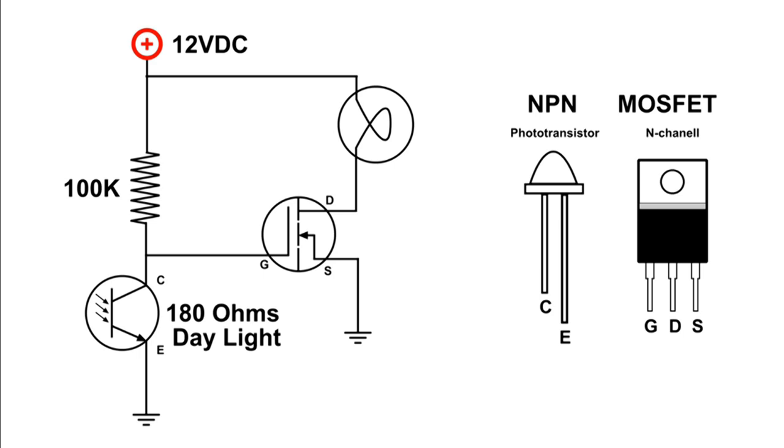Now, when night hits, the phototransistor no longer conducts or is turned on, so that 100k ohm resistor can put voltage on the gate. It's an N-channel MOSFET, so the light comes on.